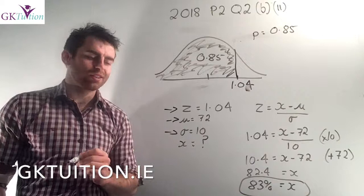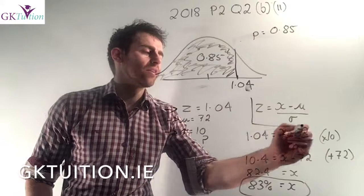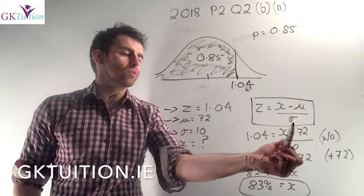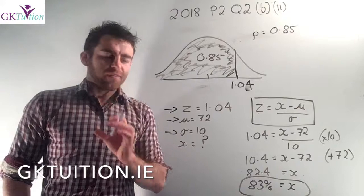Now I know John's z-score is 1.04, the population mean μ is still 72, and the standard deviation is still 10. The only unknown is x — John's actual result. Using the standardizing formula again, this time I know z, μ, and σ, and I'm solving for x. Substituting in the values, the algebra is straightforward and x works out as 82.4%.